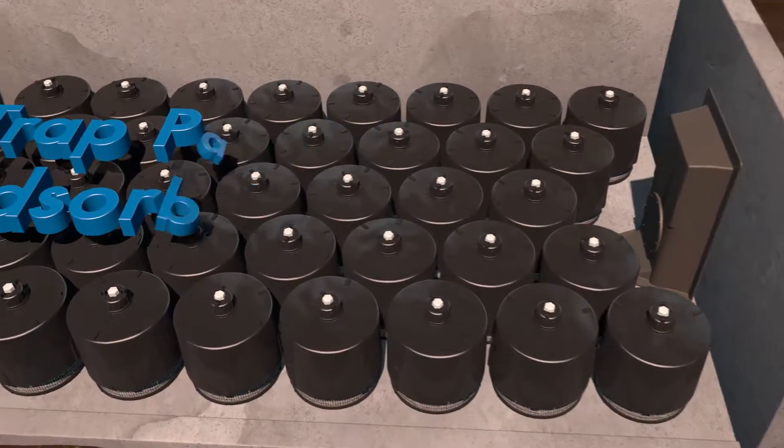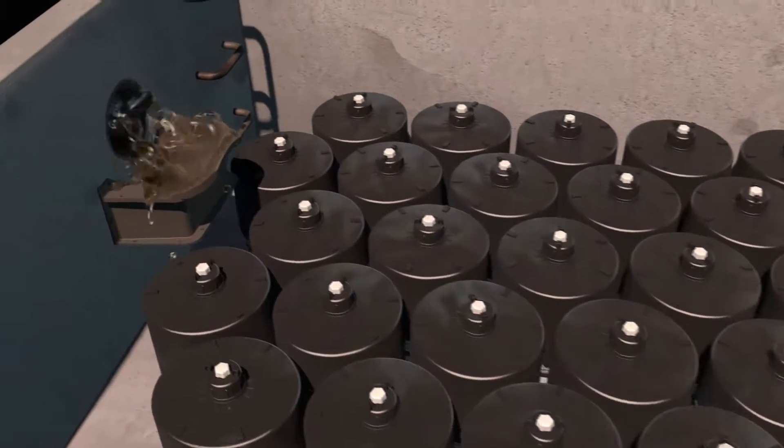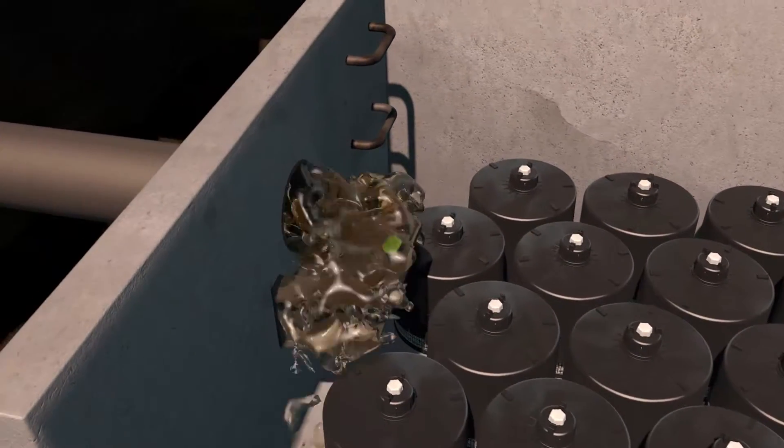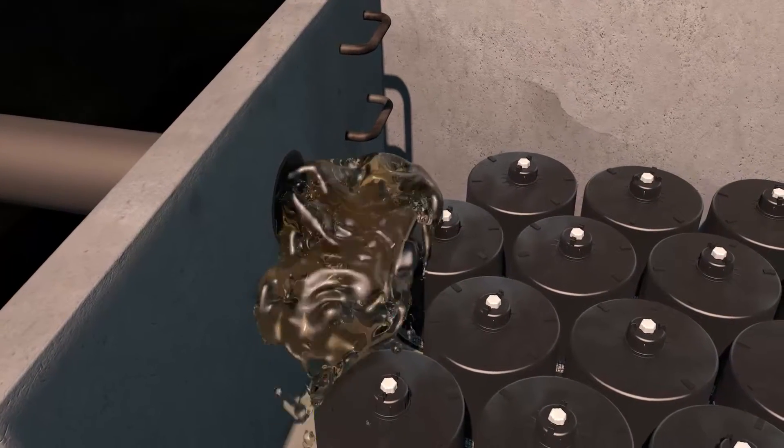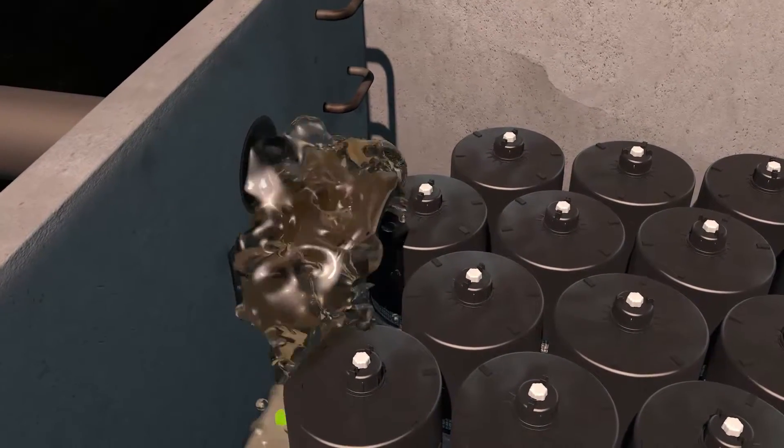During a rainfall event, stormwater enters the structure through the inlet pipe and is directed to an energy dissipator to minimize re-suspension of previously captured pollutants during the treatment process.